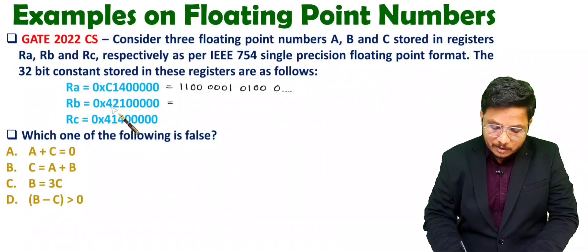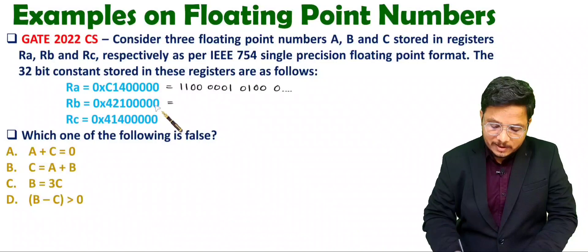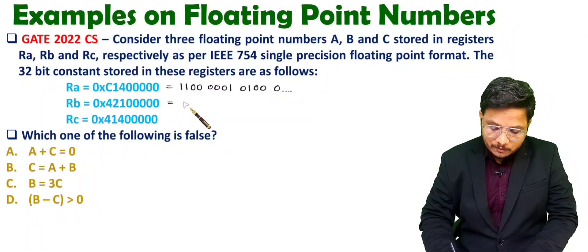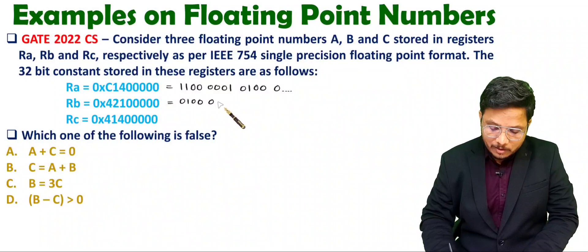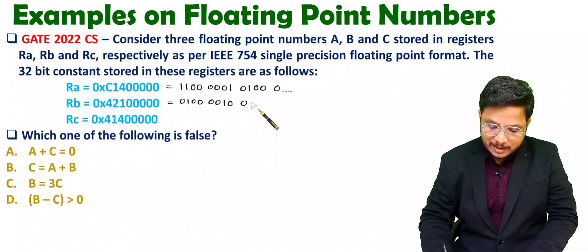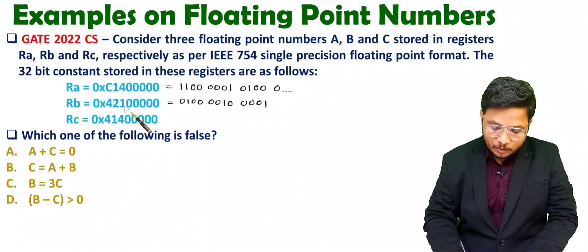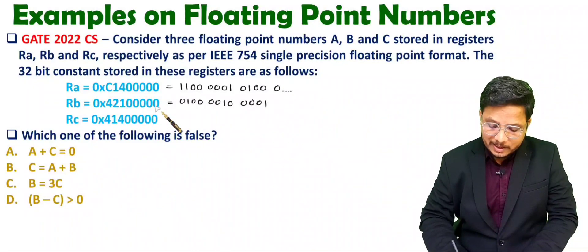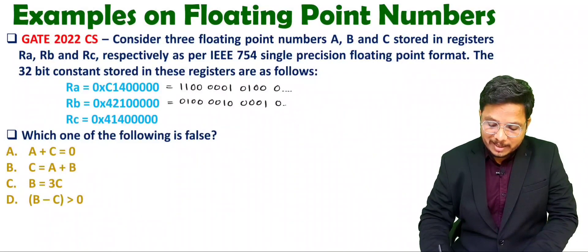For RB we have 4, 2, 1 and then zeros. So 4 means 0100, then 2 means 0010, then 1 means 0001. That is how 4, 2, 1 is represented, and then all zeros follow.